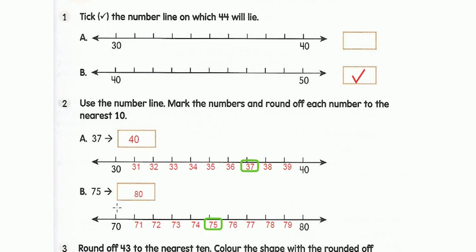Next is 75. First, mark the numbers between 70 and 80 on the number line, then mark the given number 75. Here, 75 itself is the midpoint, so we round off the midpoint to the bigger ten. The bigger ten is 80, so we round off 75 to 80.